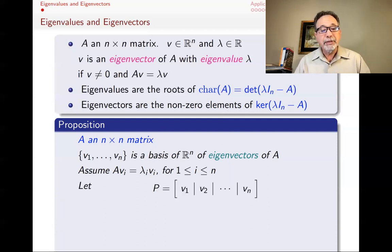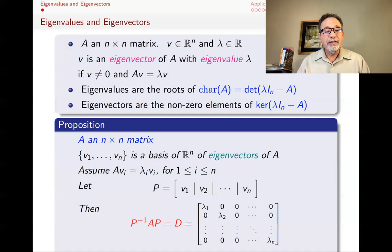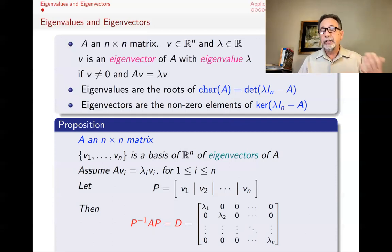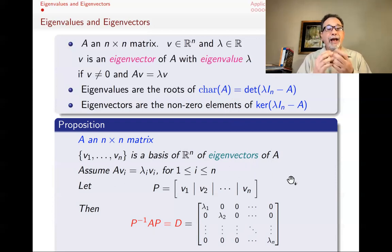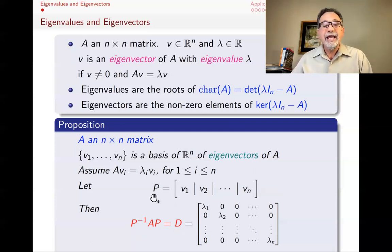If you make a matrix P out of those eigenvectors — so each column of this matrix is one of those eigenvectors — then P inverse AP will be diagonal, and the entries on the diagonal will be the eigenvalues. A diagonal matrix has zeros everywhere other than on the diagonal. This is what diagonalization means: if you can find n linearly independent eigenvectors for a matrix, then P inverse AP equals D, and A and D are similar matrices with many similar properties.